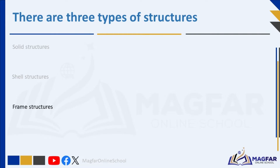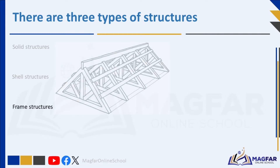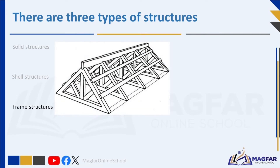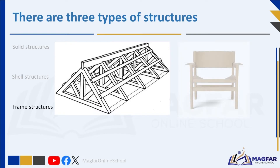Frame structures are structures made of rigid parts joined together to form a framework. There are two main forces that these structures experience: compression and tension. We also make objects that consist of different parts put together, like chairs, tables and bridges. These objects are called frame structures, and it is important to try to make frame structures strong.